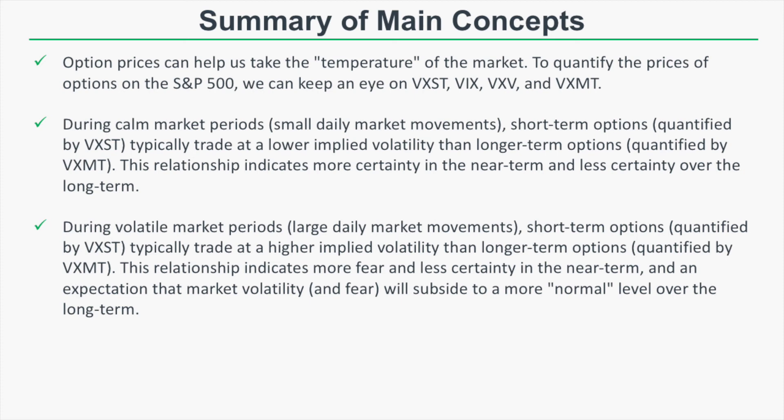Let's quickly recap the main concepts. Option prices can help us take the temperature of the market, and to quantify S&P 500 option prices we can monitor VXST, VIX, VXV, and VXMT — giving us a much better picture of the volatility landscape than just the VIX alone. During calm market periods, meaning small daily market movements, short-term options as quantified by VXST typically trade at lower implied volatility than longer-term options as quantified by VXMT, indicating more near-term certainty.